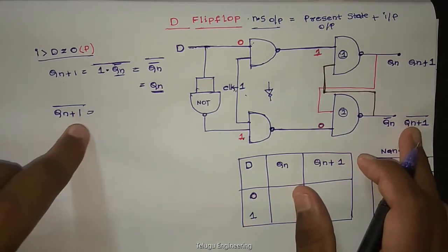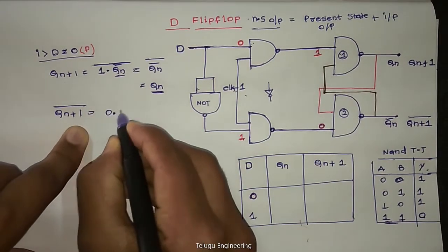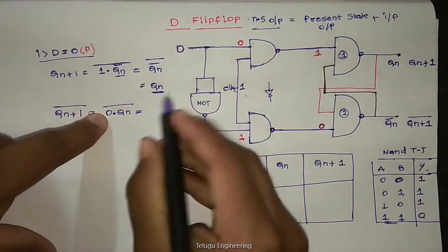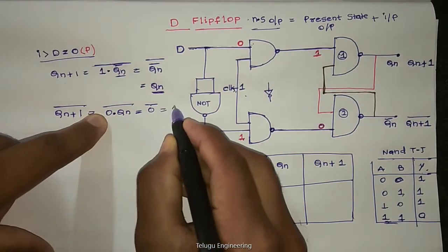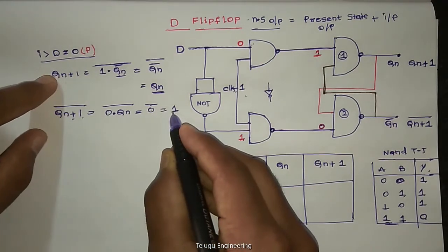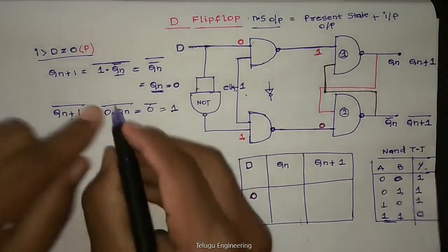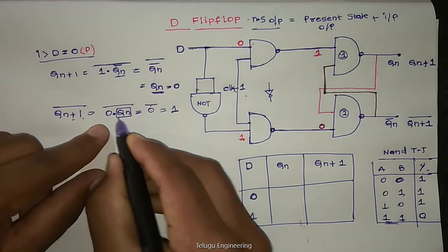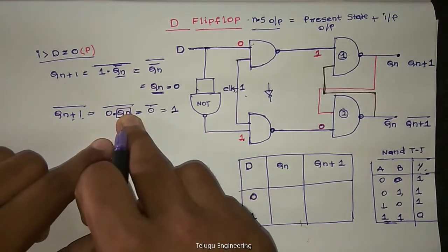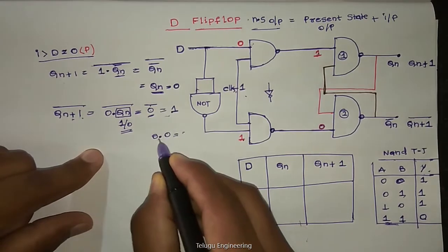NAND gate 1 equal to Qn. NAND gate 2 inputs: zero and Qn. So zero dot Qn whole bar. AND of anything with zero is zero. So zero bar is one. Qn+1 whole bar is one. We can directly say this as zero.